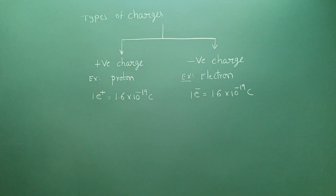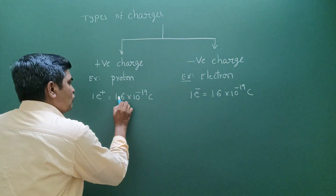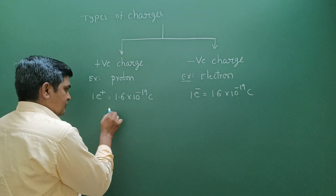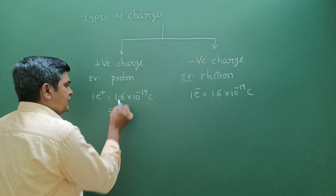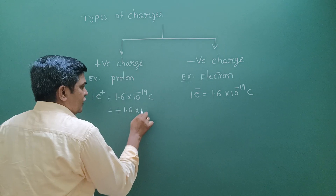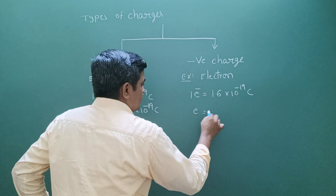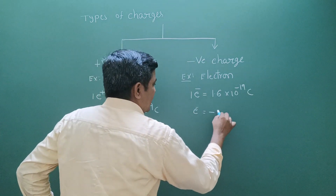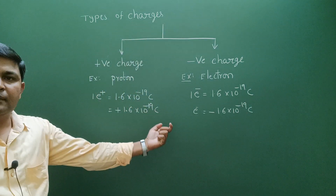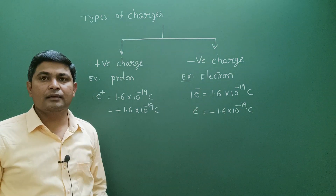For the proton, the charge quantity is +1.6 × 10⁻¹⁹ coulombs. For the electron, it is −1.6 × 10⁻¹⁹ coulombs. The quantity is the same — only the sign convention is different: plus for proton and minus for electron.